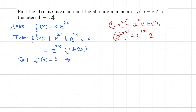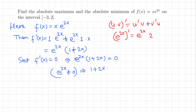Now we set the derivative equal to 0 to find the critical numbers: e^(2x)(1 + 2x) = 0. We have a product of two things equal to 0, so either factor could be 0. However, exponential functions are never 0 — if you graph y = e^(2x), the graph never intersects the x-axis. So e^(2x) is never 0, which forces 1 + 2x = 0.